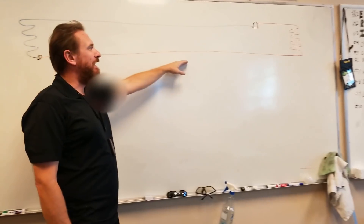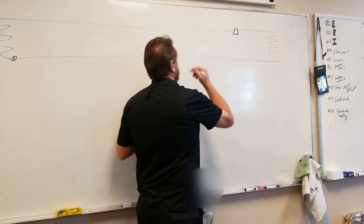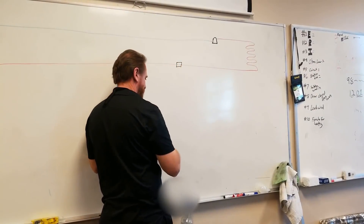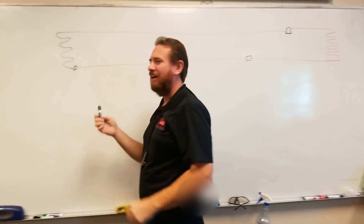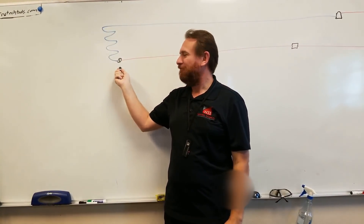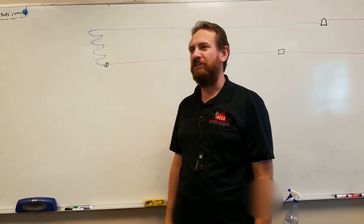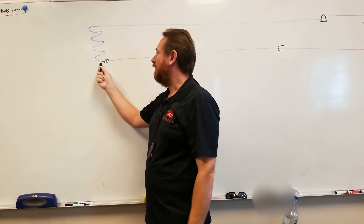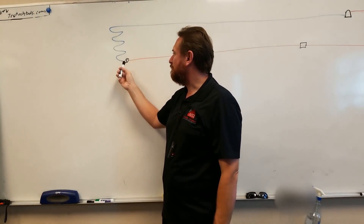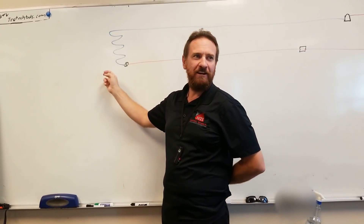We have our liquid line, and somewhere in there we have to have our liquid line filter dryer. The metering device is a different component. Then we get to our metering device, which restricts the refrigerant from a high pressure liquid to a low pressure saturated mixture — approximately 75% liquid and 25% vapor. That drops the saturation temperature below the temperature of the air.